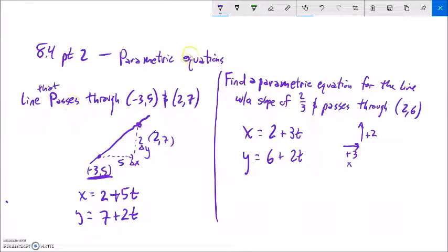Writing these parametric equations from lines, you just need to think about the slope, what slope means, change in x, change in y, and pick a point that you're going to start from.